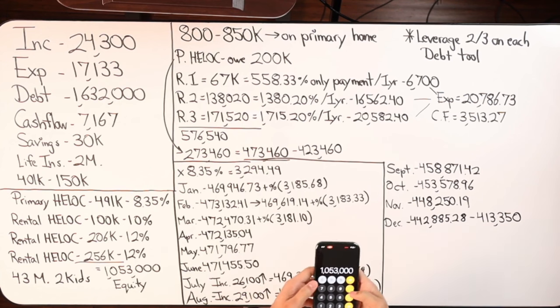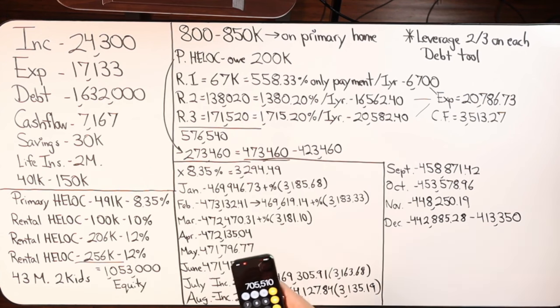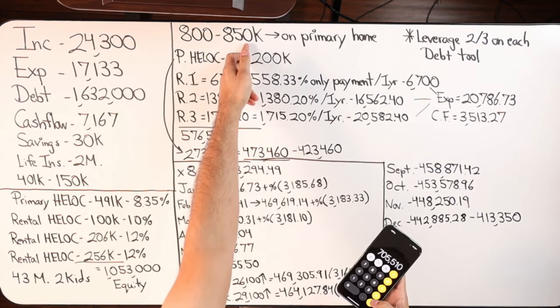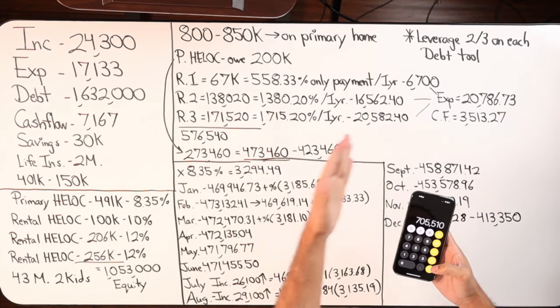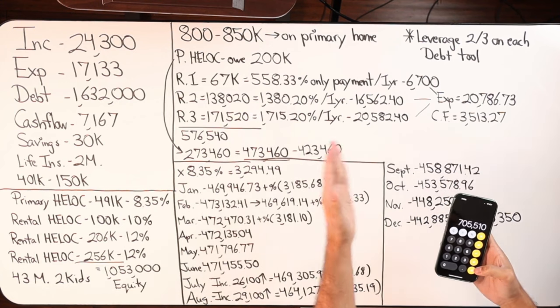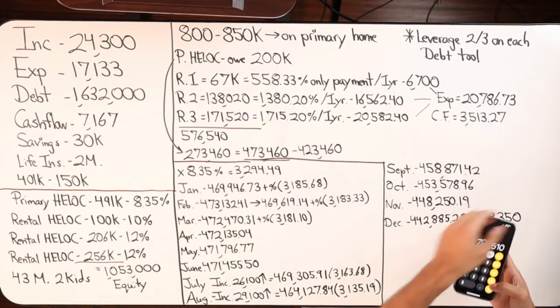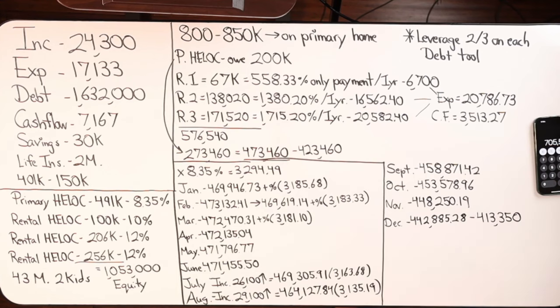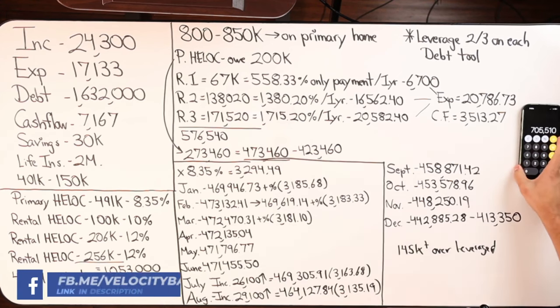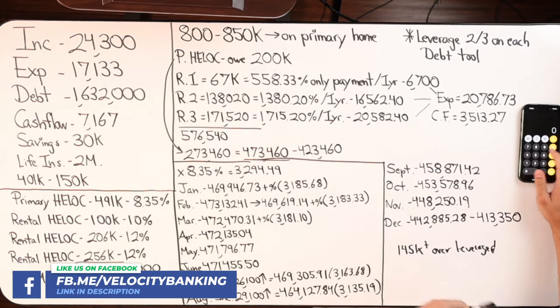So if we took the $1,053,000 number and we times that by 67%, that'd be $705,510. The fact that I'm using the $850,000 number, that's roughly - I'm over-leveraging myself by nearly $145,000 more dollars over-leverage. So we're $145,000 plus over-leveraged, just looking at my one rule of leverage capacity. Then to validate the 705 number, I also take my cashflow times it by 12.